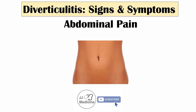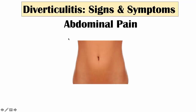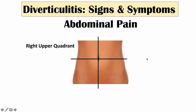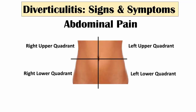I want to briefly talk about where we have pain in diverticulitis. If we look straight on to someone's abdomen, this would be the right side of the patient and this would be the left side. We break the abdomen down into quadrants — right through the belly button or umbilicus — giving us the right upper quadrant, right lower quadrant, left upper quadrant, and left lower quadrant. The left lower quadrant is the most common location for abdominal pain in diverticulitis, because that's where the sigmoid colon is, and diverticula can form and become inflamed there.